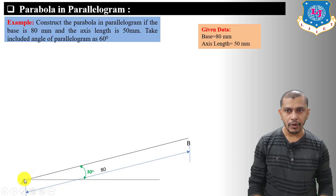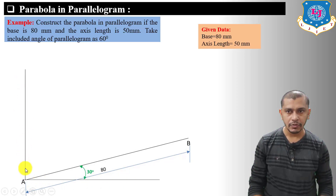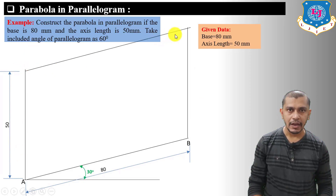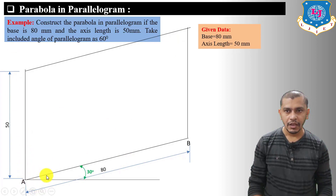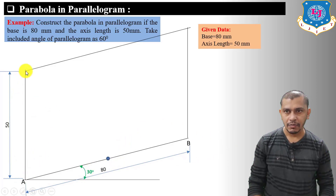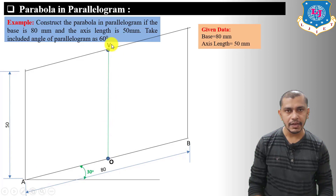From point A draw a line perpendicular to the horizontal baseline having length 50 mm — this gives the included angle of 60 degrees. From point B draw a line parallel to that line, also 50 mm. Connect the two top points to complete the parallelogram. Find the midpoint of AB and from it draw the axis of the parabola — OV will be the axis.